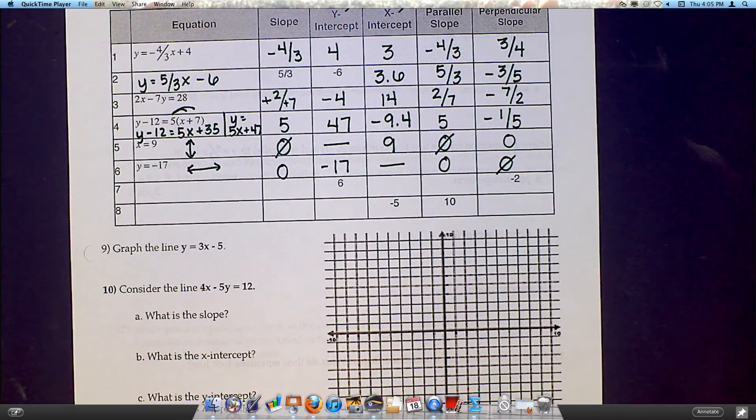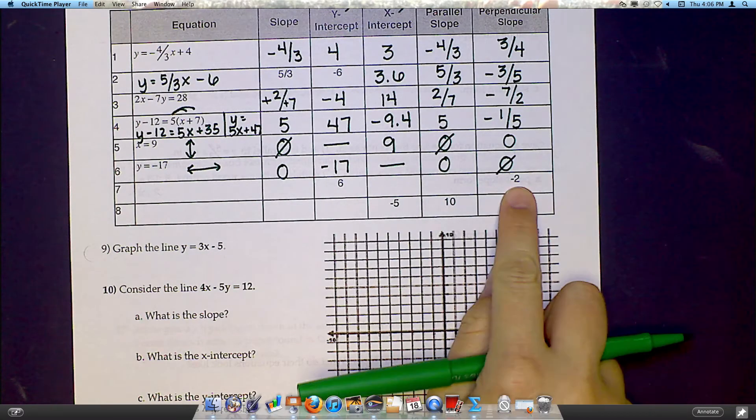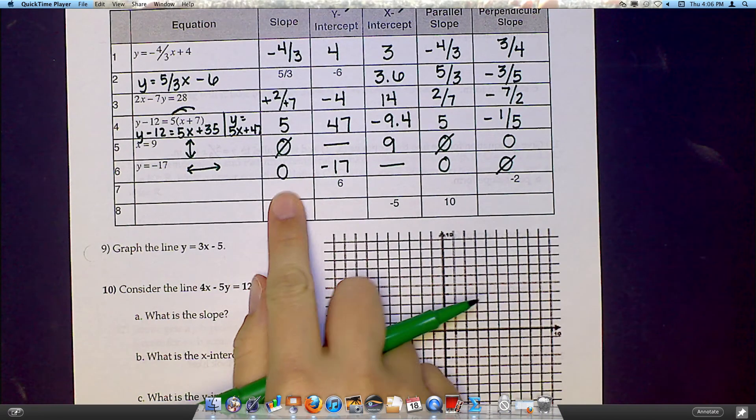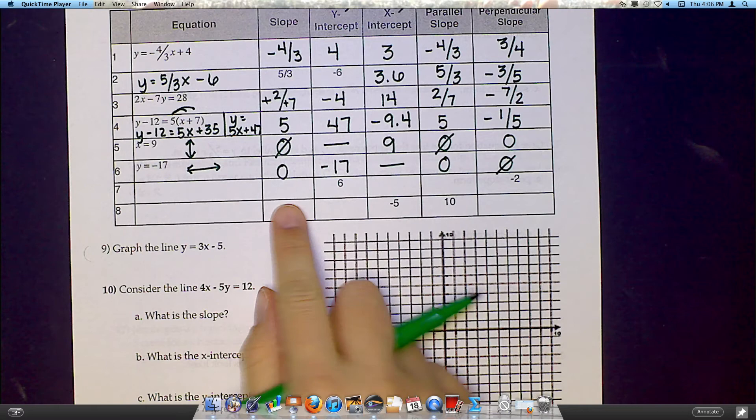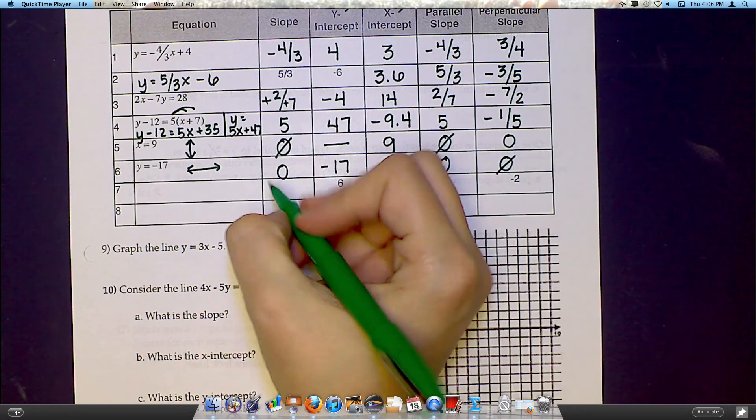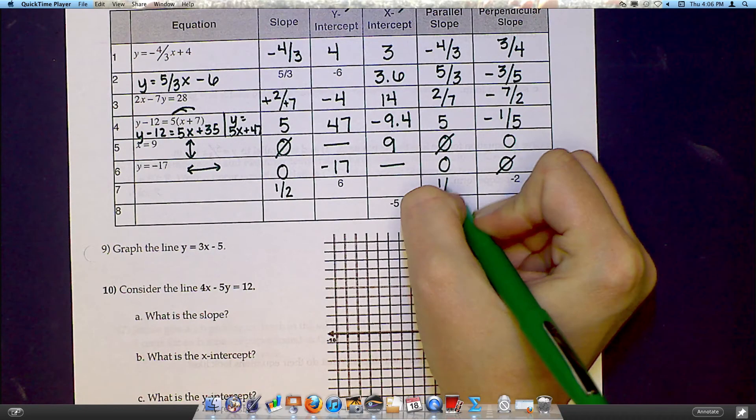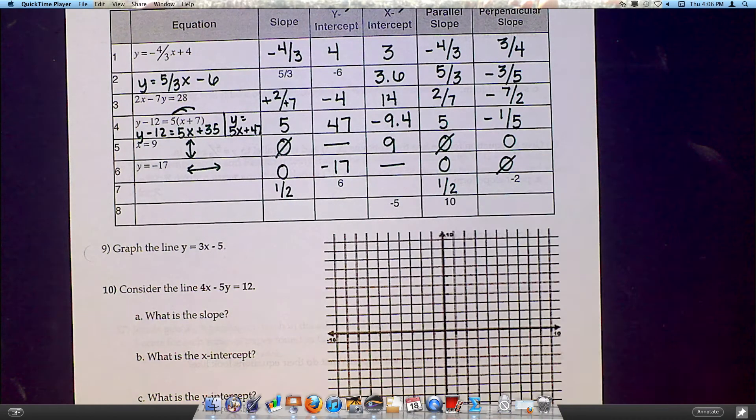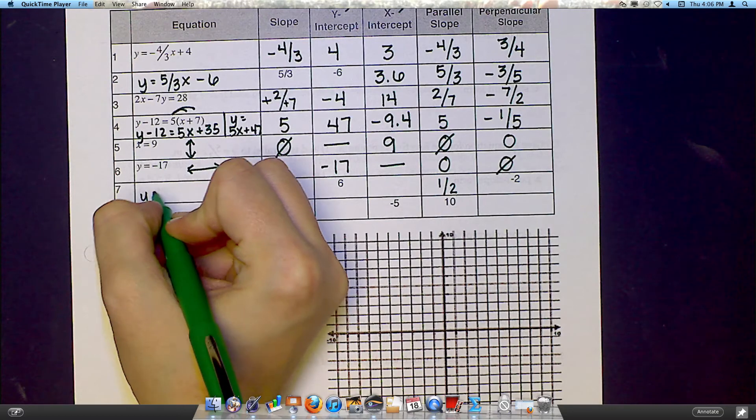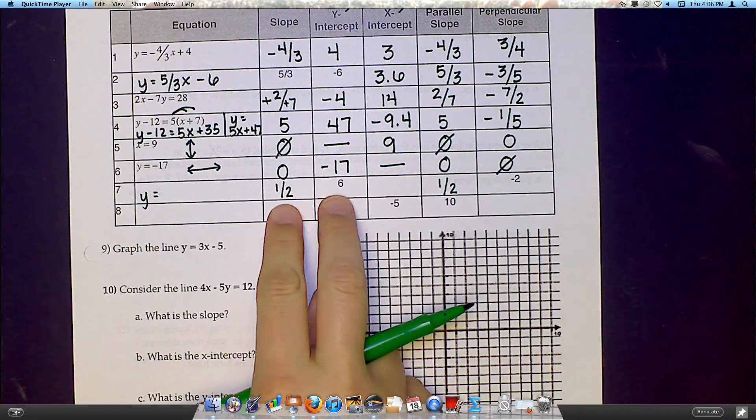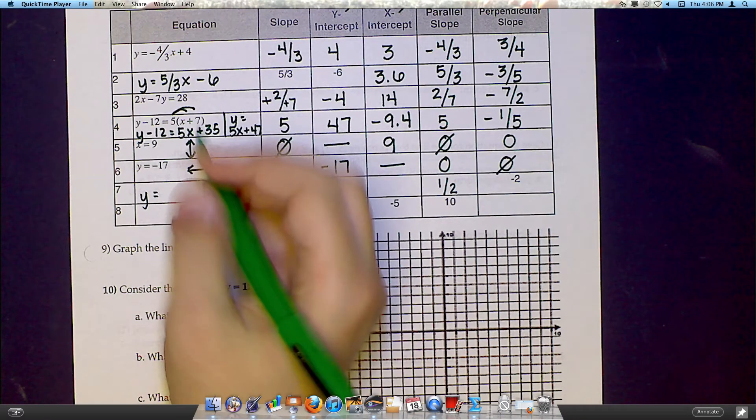Number 7 gives you a y-intercept and it gives you a perpendicular slope. Well, if it gives you a perpendicular slope, we can get back to our original slope by doing the opposite reciprocal again. So the opposite reciprocal of negative 2 would be positive 1 half, which means this is also positive 1 half. Now I can say my equation is 1 half x plus 6. So anytime you have these two things, you can make an equation right out of that.